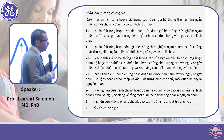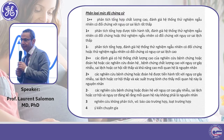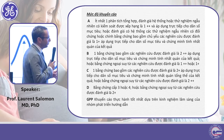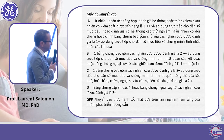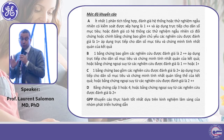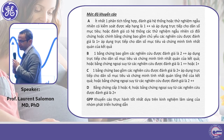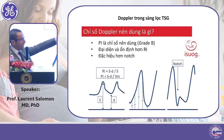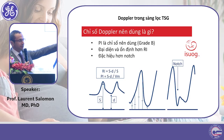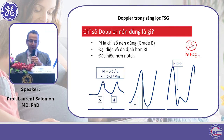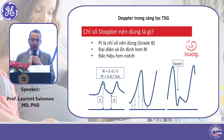What is the preferred Doppler index to screen for preeclampsia? Among the different Doppler indexes, the one that performs the best — the only one you should use — is the pulsatility index. It is calculated as the systolic flow minus the diastolic flow divided by the mean velocity. This is something you cannot calculate by yourself; the machine calculates the pulsatility index.